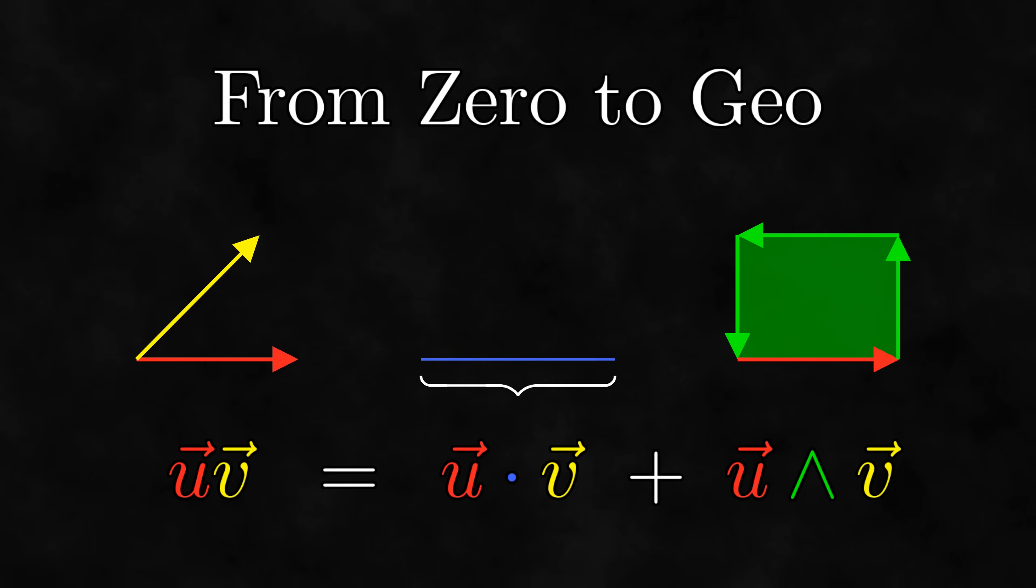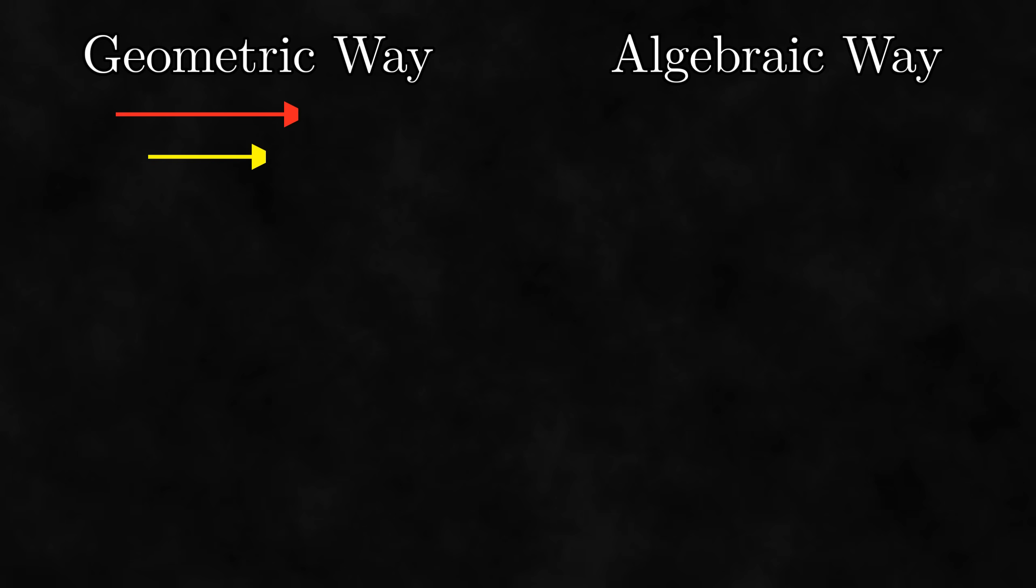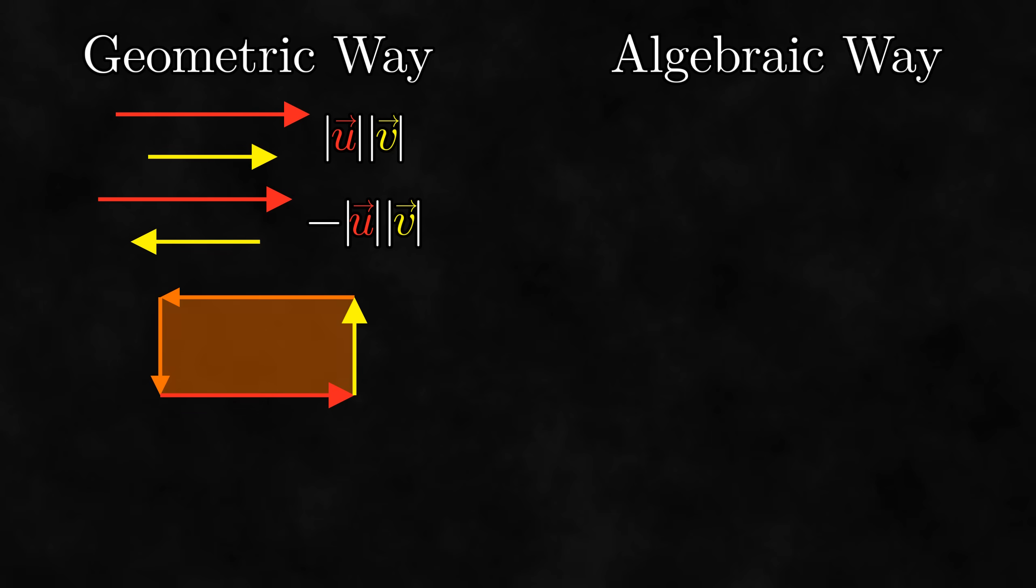Before we talk about the product of arbitrary multivectors, let's briefly summarize how we find the product of vectors. There are two ways to think of it, a geometric way and an algebraic way. Geometrically, we multiply parallel vectors by multiplying the lengths of the vectors. If the vectors are pointing in opposite directions, it's the negative of the product of the lengths. We multiply perpendicular vectors by joining the two vectors into a bivector, with the orientation going along the first vector and then the second. To multiply arbitrary vectors, we can split one vector into parts that are parallel and perpendicular to the other and multiply these parts separately.